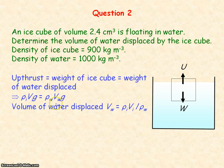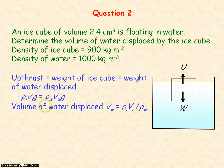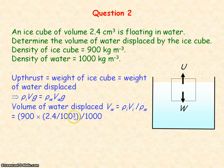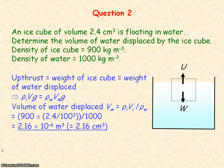If we rearrange this equation to make the volume of the water displaced the subject, it will equal the density of the ice cube multiplied by the ice cube's volume divided by the density of the water — the g's cancel as they are on both sides of the equation. It is important to convert the volume of the ice cube from centimetres cubed into SI units, that is metres cubed, by dividing by 100 cubed. We get the volume of water displaced to be 2.16 times 10 to the minus 6 metres cubed, or 2.16 centimetres cubed.